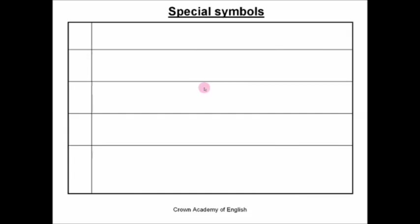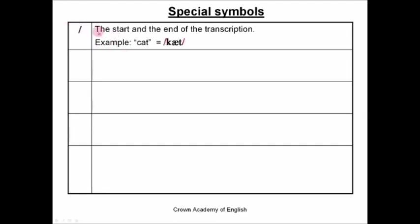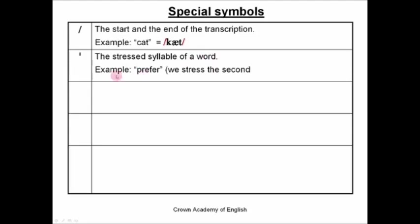Now let's start with the IPA symbols. First of all, there are some special symbols. This one is the start and the end of the transcription. For example, if we have the word cat, we show the start and the end of the transcription with the slash symbol. This symbol shows the stressed syllable of a word. For example, the word prefer — can you hear that we stress the second syllable? In IPA, we show that with this symbol to indicate which syllable we stress. Prefer.